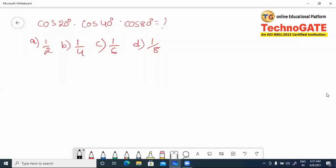Welcome to TechnoGATE online educational platform. In this video, I will solve a problem on trigonometry. The question is: cos 20° × cos 40° × cos 80° - what is the value?